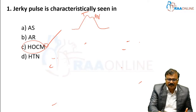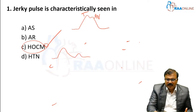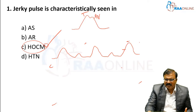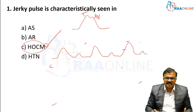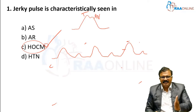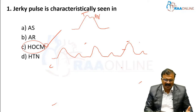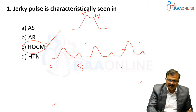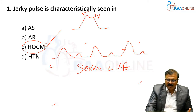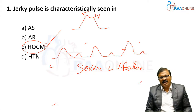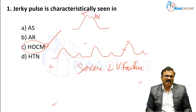Pulsus alternans is a normal pulse followed by a weak pulse, alternating normal and weak pulse. You get pulsus alternans in severe left ventricular failure.